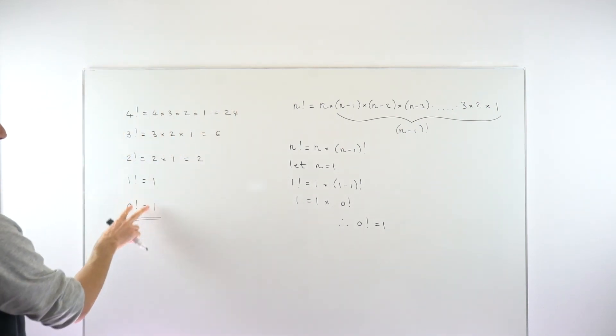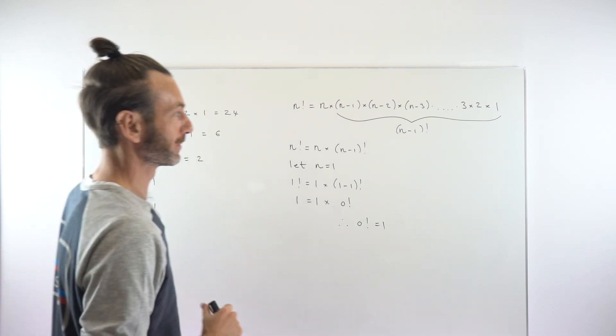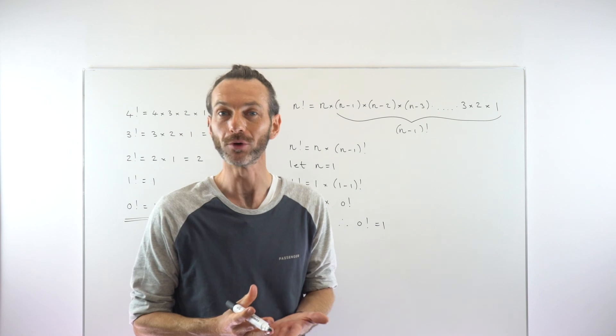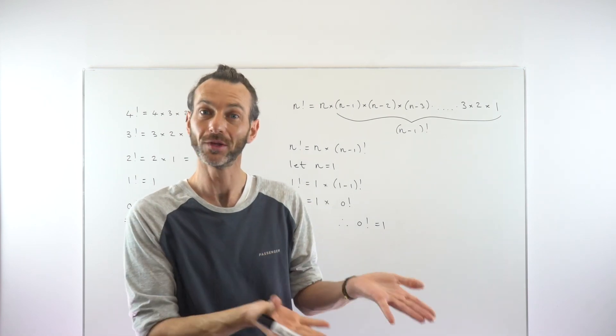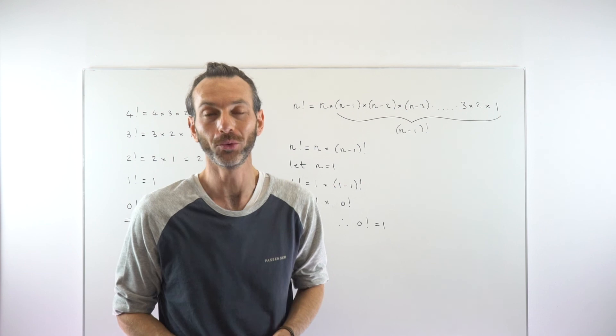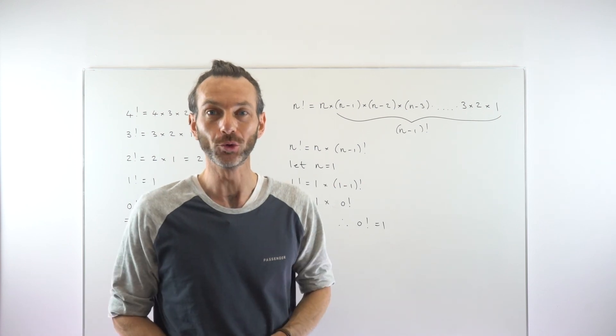And the weird thing to me is that both of these should be 1. You know, 1 factorial and 0 factorial equal the same thing. That doesn't happen often with numbers. Numbers are different. 5 is 5, 6 is 6, but 0 factorial and 1 factorial both equal 1. That's how you show it.